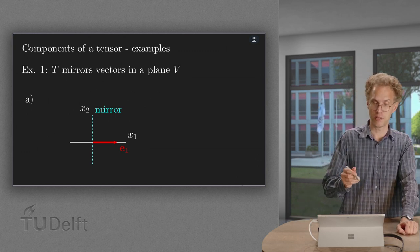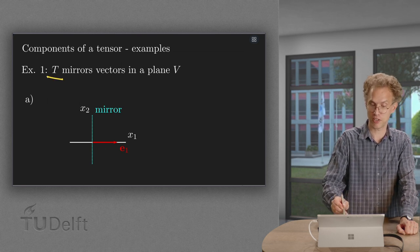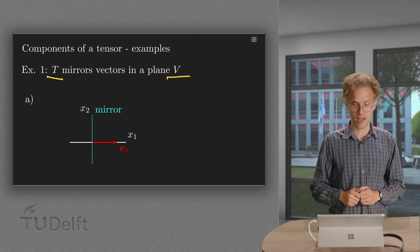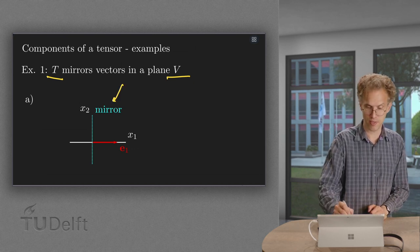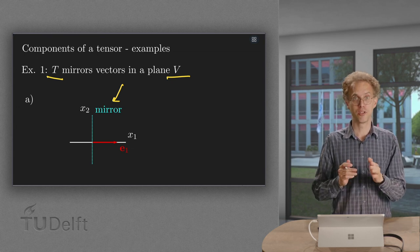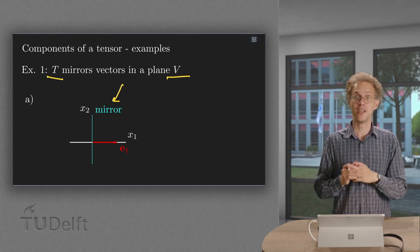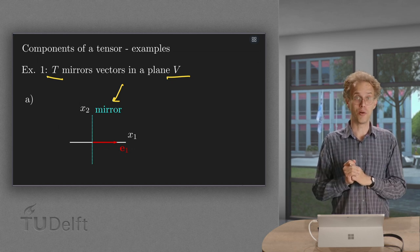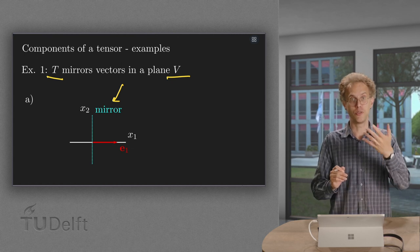First example. Suppose we know that our tensor T mirrors vectors in a plane V with normal. Here is our mirror, a mirror with normal e1. So you're basically mirroring in the x2-x3 plane. So how do we get the components of our tensor T if we use the standard basis e1, e2, e3?